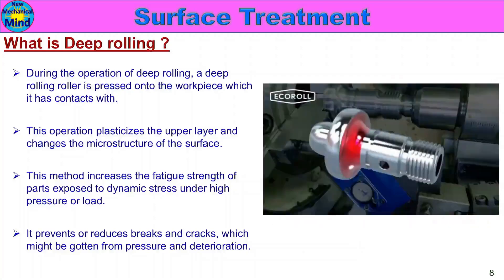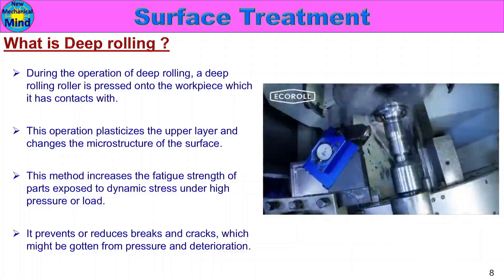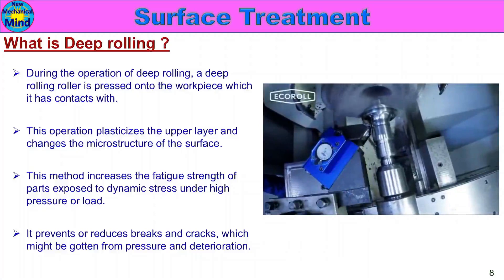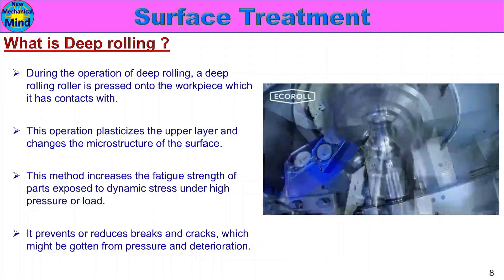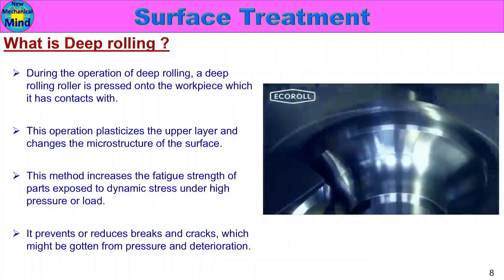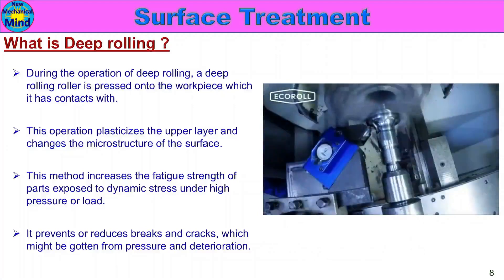In this diagram, the red color identifies the surface in the deep rolling process. The deep rolling roller touches the part with pressure and moves along it. It rotates continuously. Looking at the top surface, the plastic deformation will increase the fatigue strength. This is the deep rolling process.